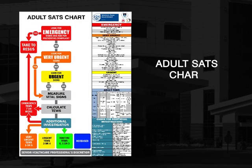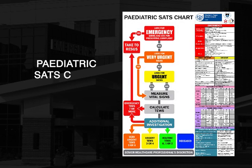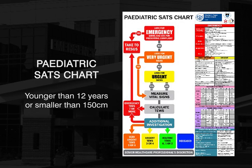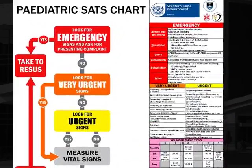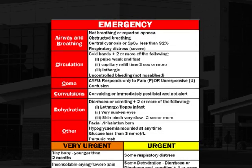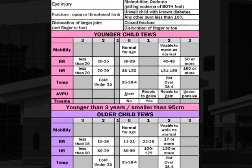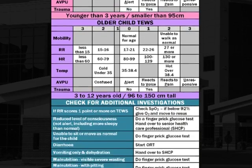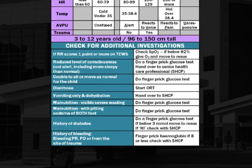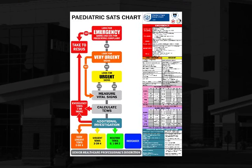The South African triage scale has two versions: one for adults older than 12 years or taller than 150 centimeters, and one for pediatrics younger than 12 years or smaller than 150 centimeters. Each of these versions has three important components: clinical discriminators or signs, physiology — the TWOS as a composite score — and some key additional investigations. Each of these three components allows us to categorize the patient to their appropriate priority level.